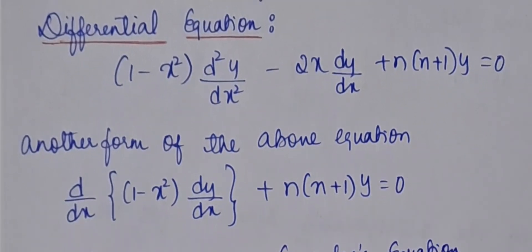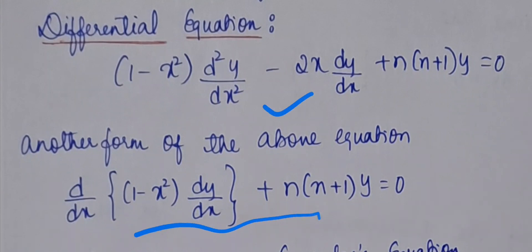Another form of the equation is given by: d/dx [(1 - x²) dy/dx] + n(n+1)y = 0. If you simplify this equation, you get the same equation back. That is the another form of the Legendre polynomial.